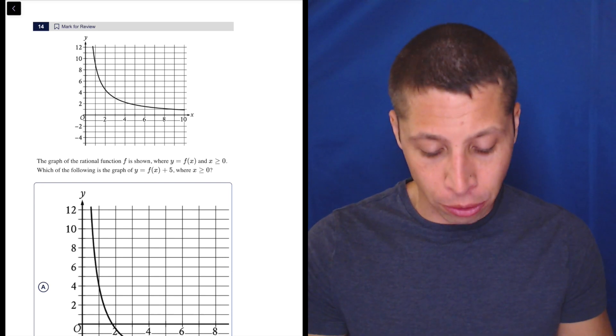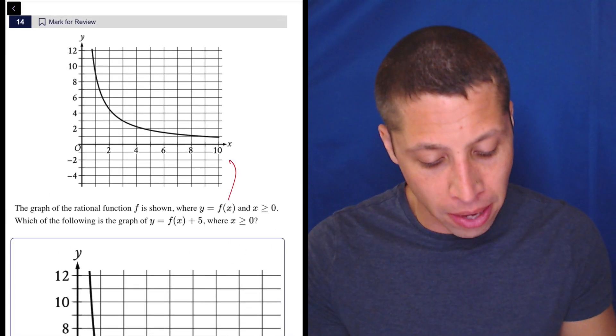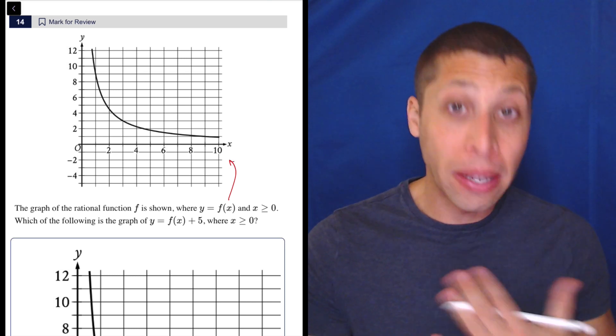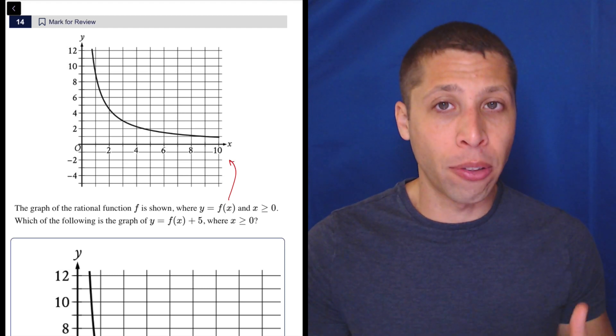What we have here in this original graph is the graph of y equals f of x. It's important to recognize that because sometimes they'll give us the shifted graph, but basically what they're asking for is the shifted graph, and that's why this one isn't so bad. But we need to understand how the shift works.